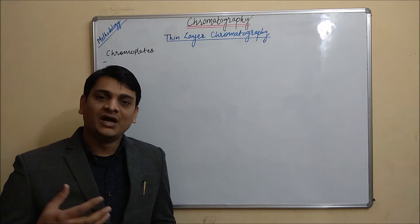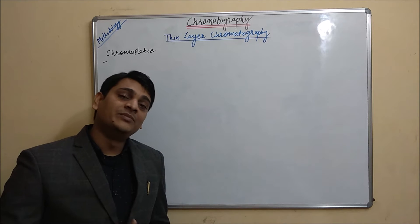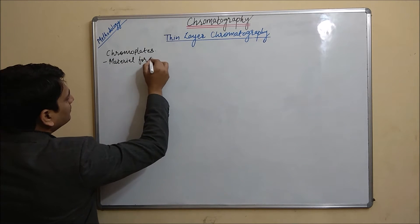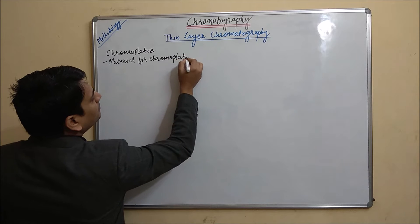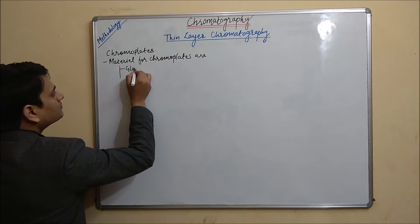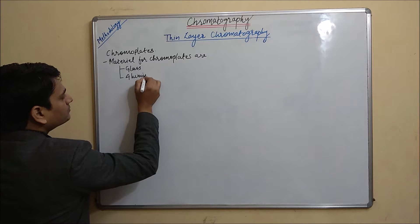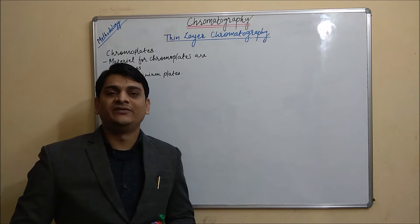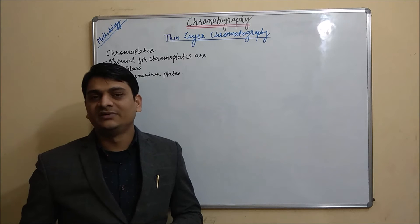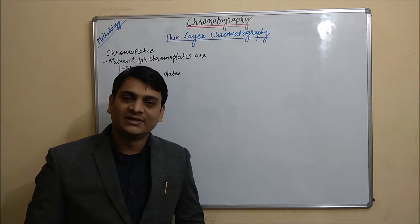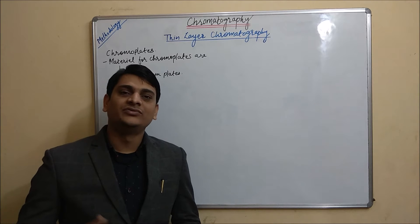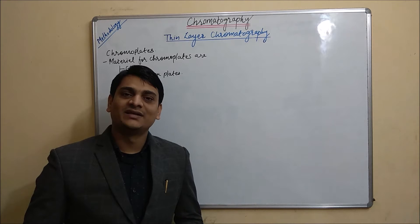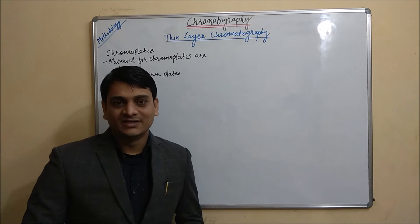Chromoplates are made up of either glass or aluminium plates. Ideal sizes for chromoplates will be 20x20cm, 20x10cm, 20x5cm, 10x10cm, etc., as I have already discussed in the introduction part of the TLC video.